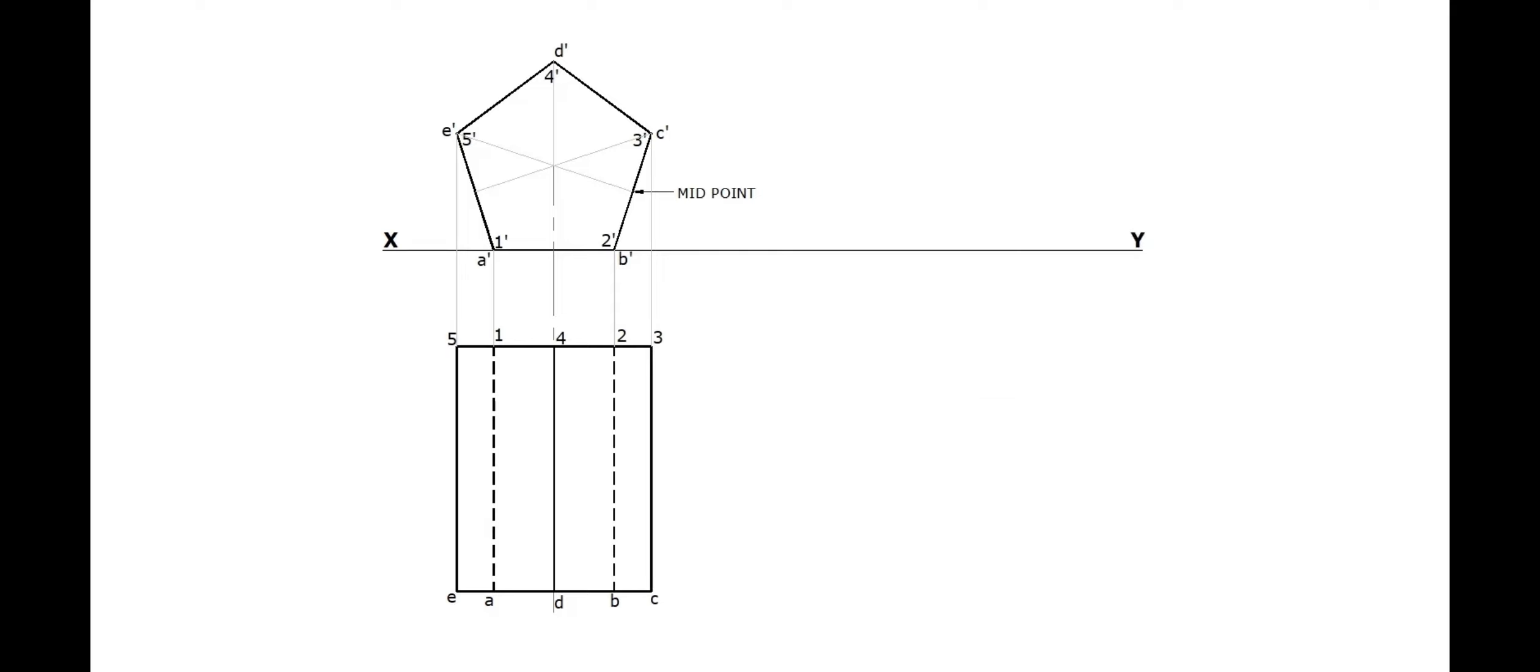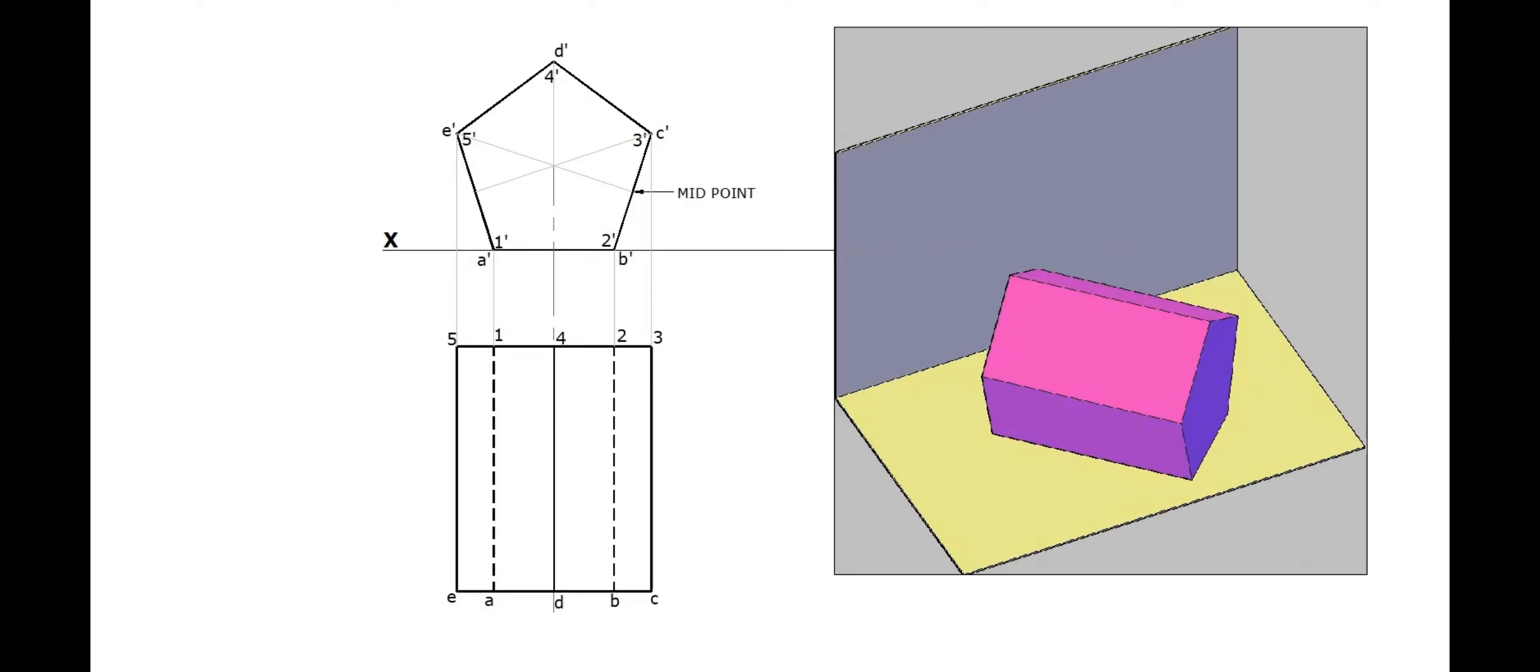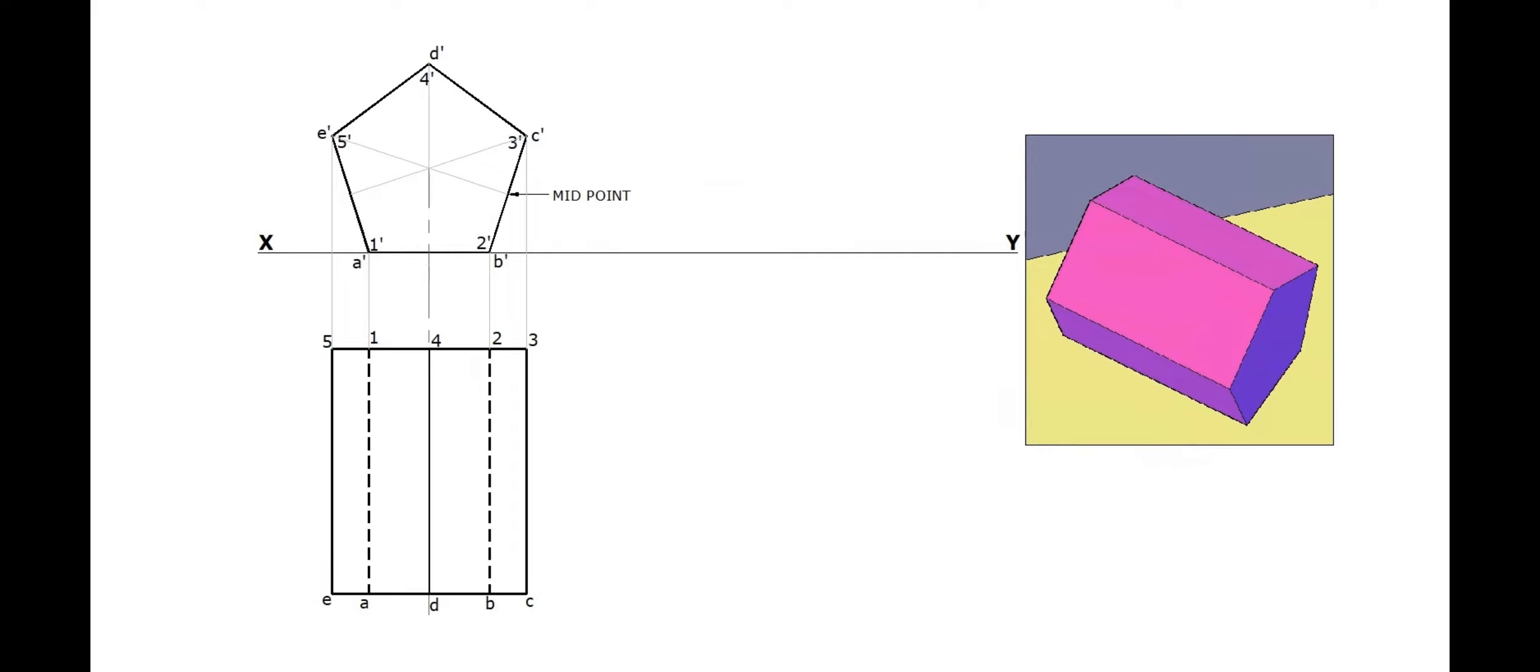Now the object is to be tilted as per the inclination of the axis with respect to VP. So the second stage plan is similar to that of the first stage plan, but is tilted for 45 degrees. Axis and longer edges of a prism are parallel. So the axis inclination can be taken even on the longer edge also. A 45 degree line is drawn from XY line. Measure and mark the length of the longer edge 3C on this line.